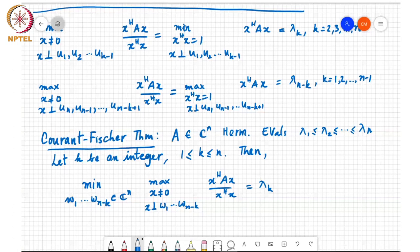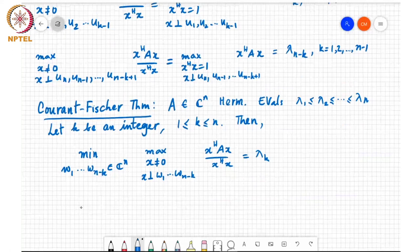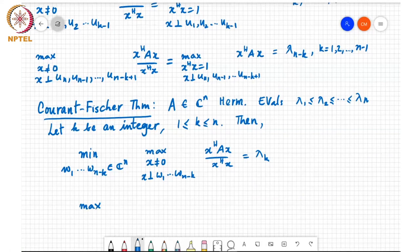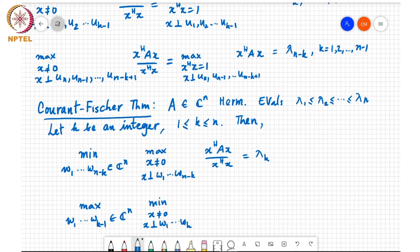The next formulation is a max-min formulation, the maximum of w1 through w k minus 1 of the minimum x not equal to 0, x perpendicular to w1 through w k minus 1, x-Hermitian Ax, the cost function is the same, is also equal to lambda k.